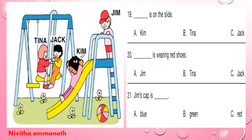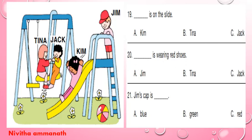Next question: dash is on the slide — Kim, Tina, Jack. Kim is on the slide, so 19A is the correct option. Dash is wearing red shoes — Tina is wearing red shoes, so 20B is the correct option.